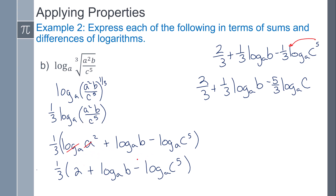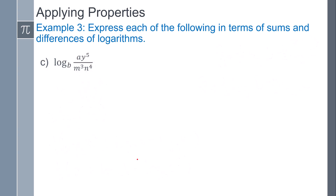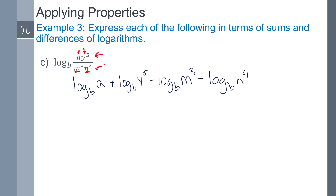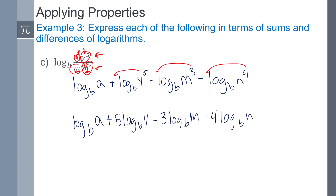The same idea applies to another expansion. Looking at the factors, I can count four logs. Numerator terms give two positive logs; denominator terms give two negative logs. So: log base b of a, plus log base b of y to the fifth, minus log base b of m to the third, minus log base b of n to the fourth. Then take those exponents and move them to the front — that's your answer.